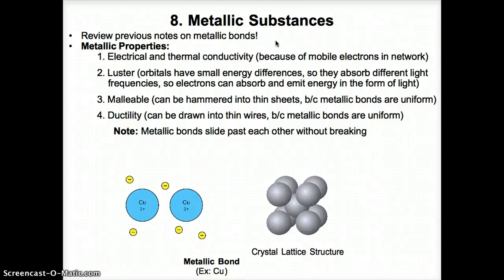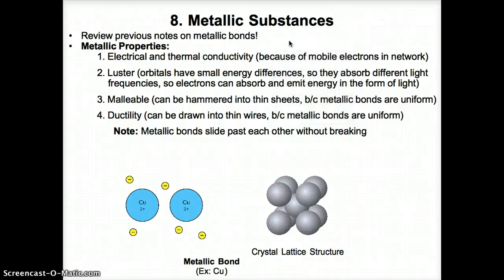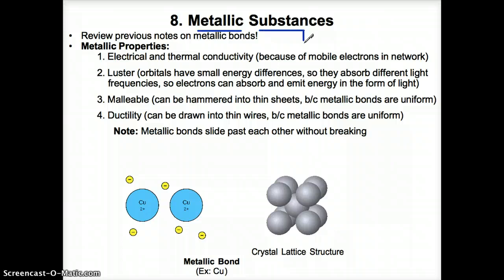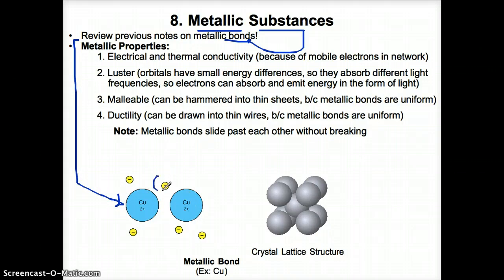Hello students, welcome to lecture 22b. Let's first start with metallic substances. Metallic substances consist of metallic bonds, as it says in your notes. Make sure you remember that metallic bonds form between the positive nuclei of the metal ions, as well as the sea of mobile electrons that flow around them.